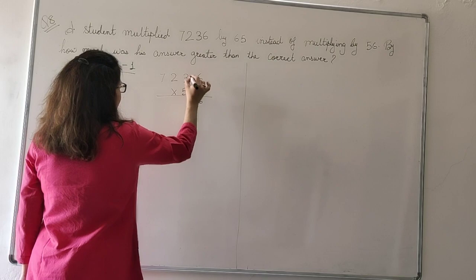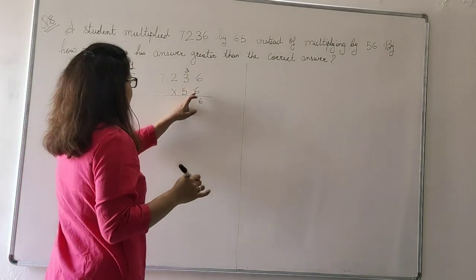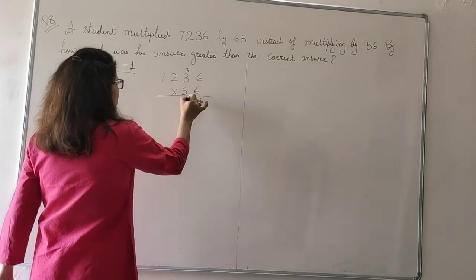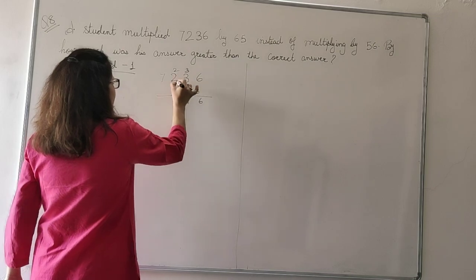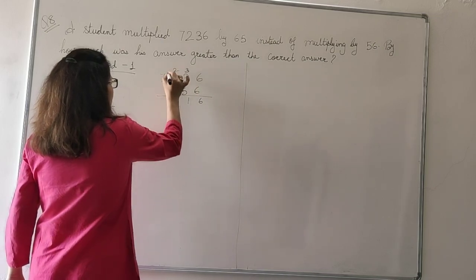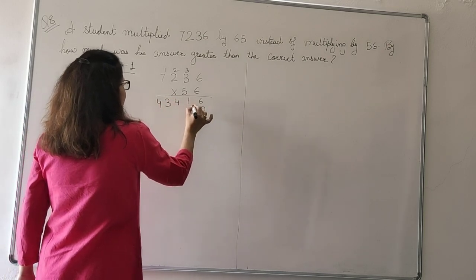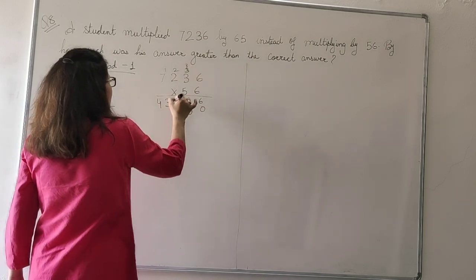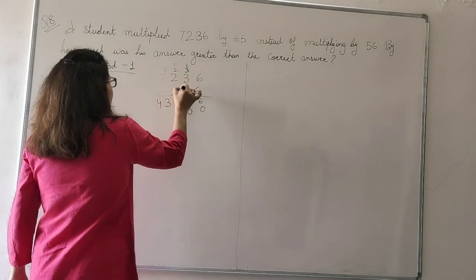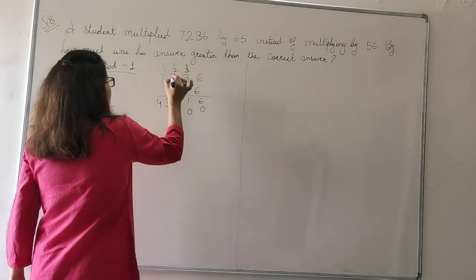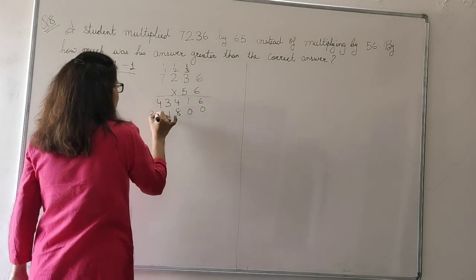6, 6 are 36, 3 carry over. 6, 3's are 18 plus 3, 21. 2 carry over. 6, 2's are 12 plus 2, 14. 6, 7's are 42 plus 1, 43. 5, 6's are 30. 5, 3's are 15 plus 3, 18. 5, 2's are 10 plus 1, 11. 5, 7's are 35 plus 1, 36.